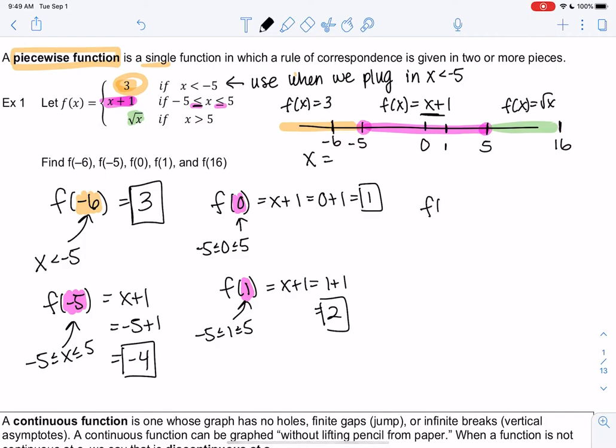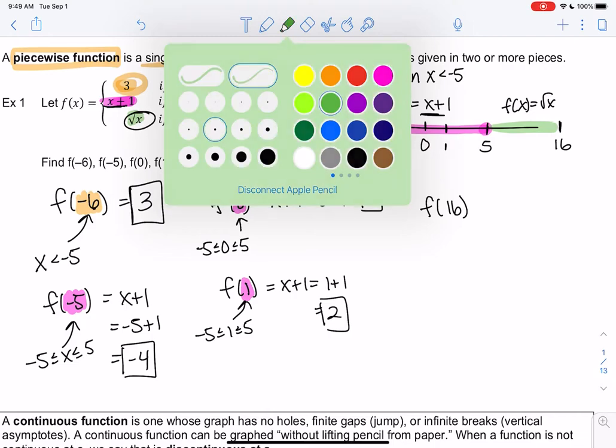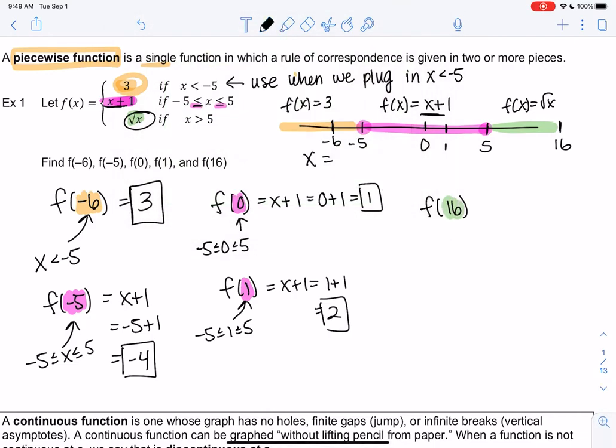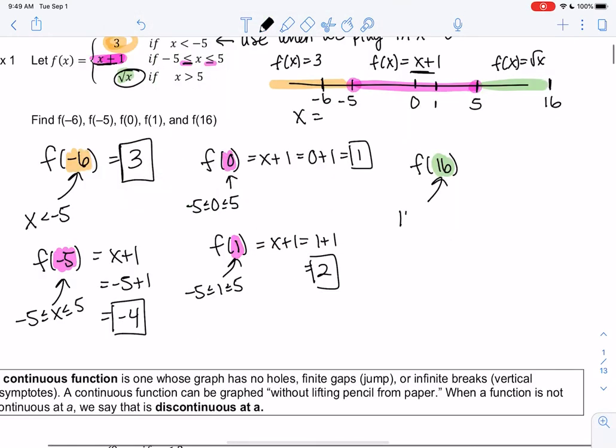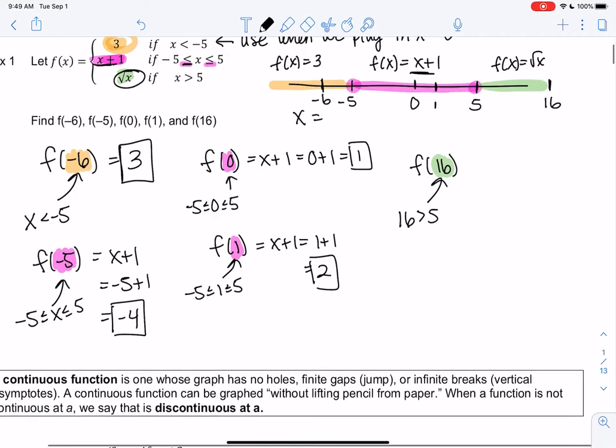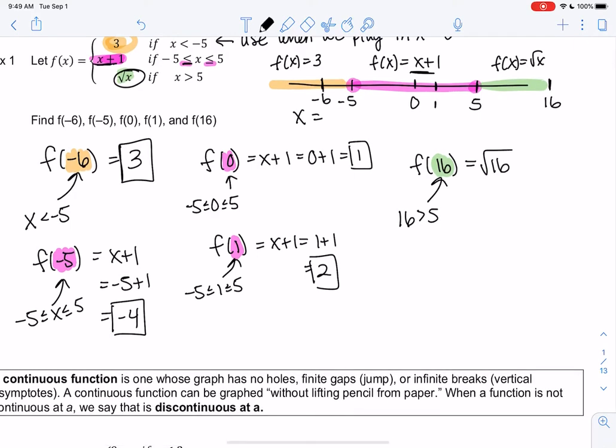And then 16, we're actually going to plug into the final piece. So it's not 16 plus 1. It's the square root of 16. And that's because 16 fits in this category of bigger than 5. So square root of 16, which is 4. So f of 16 is 4.